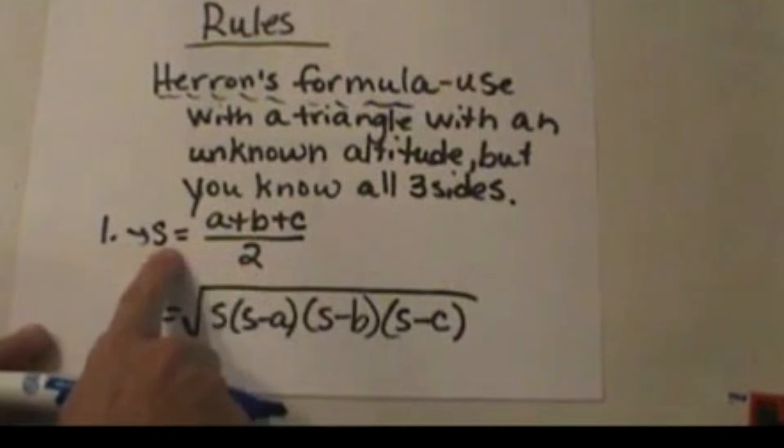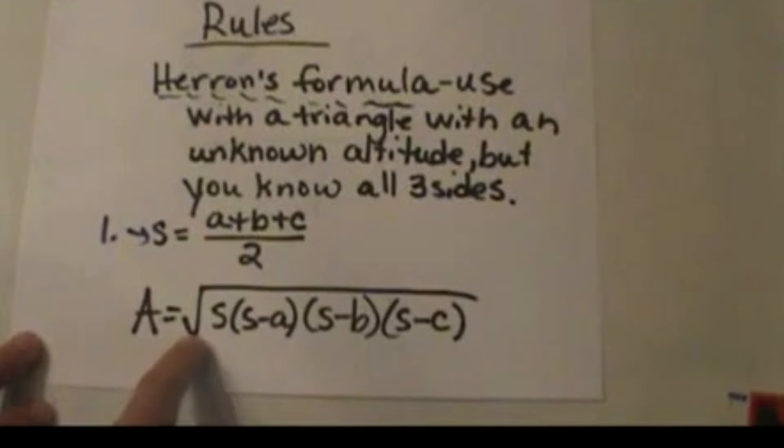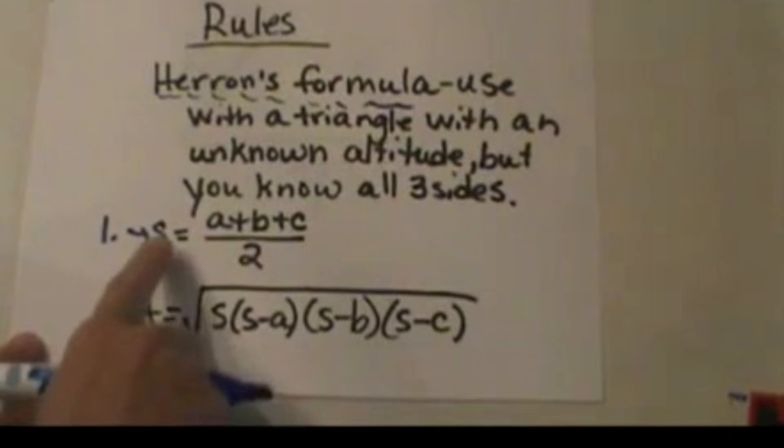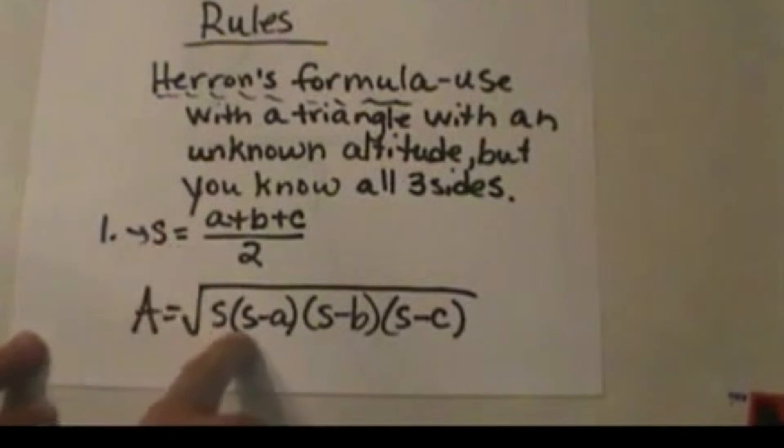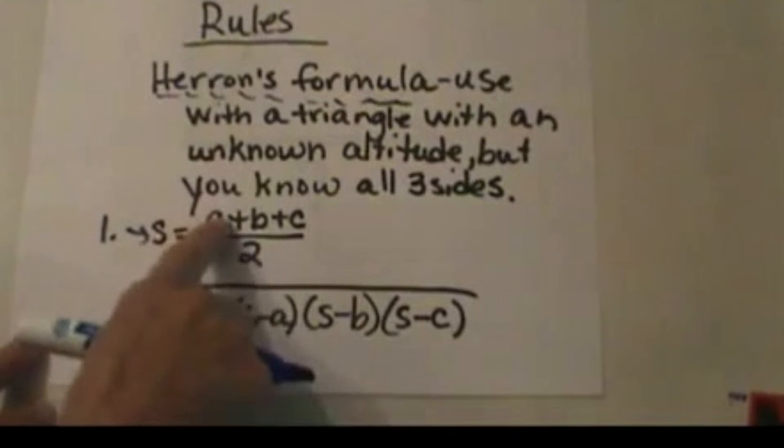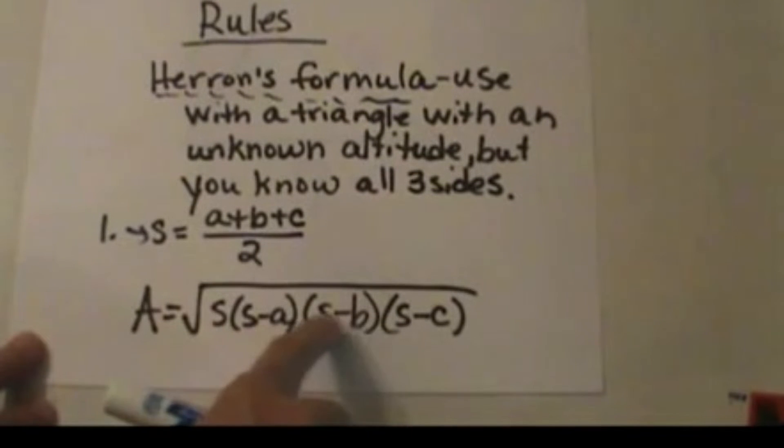Then you take that S and you plug it into the formula as follows. You take the square root of S, which is this number you're finding, times S minus A, and A is the first side, and then S minus B, B is the second side, times S minus C, which is the third side.